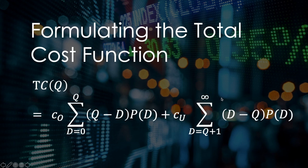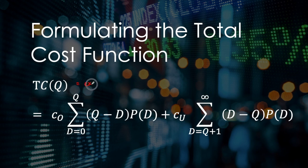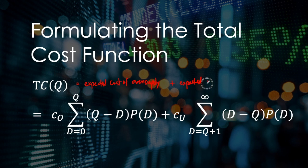Once we have our parameters C_O and C_U, we need to formulate our total cost function. Because demand is a random variable — meaning it is probabilistic — it is natural that the total cost function is an expected value. In words, your total cost function equals the expected cost of oversupply plus the expected cost of undersupply.